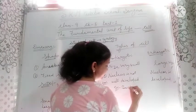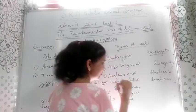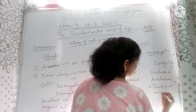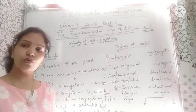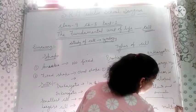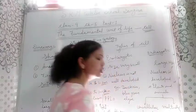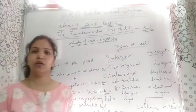Examples of prokaryotic cells are bacteria and blue-green algae. Examples of eukaryotic cells include all plants and animals. On the basis of number of cells, organisms are of two types: unicellular — like amoeba and paramecium — and multicellular, like all plants and humans.